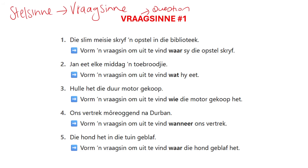Let's do number one. 'Die slimmeisie skreef een opstel in die...' So the clever girl, she's writing an essay in the library. We have to form a question to find out where she wrote the opstel. So we know she's writing the opstel in die bibliotheek — that's the place. So in our question sentence, we should not have that in the answer.